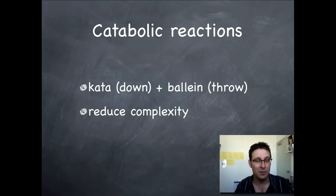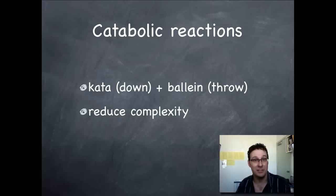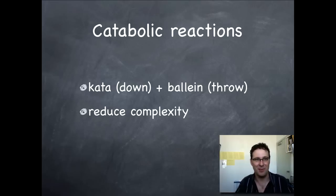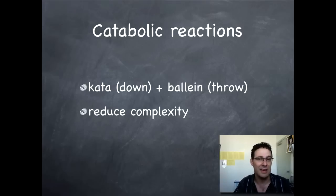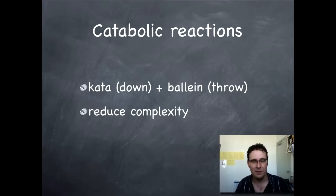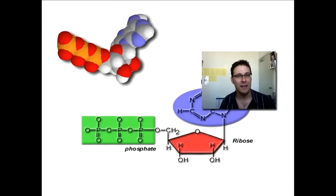It just so happens that all catabolic reactions are exergonic — breaking something down always releases energy. And all anabolic reactions, building things up, require energy. You might think, why do we have two sets of words? Catabolic and anabolic are talking about structure — the molecules. Endergonic and exergonic are talking about energy, whether energy is going in or out. They are talking about slightly different things, but you need to remember that all catabolic reactions are exergonic and all anabolic reactions are endergonic.